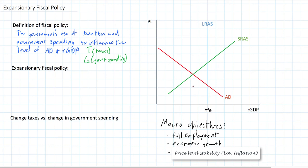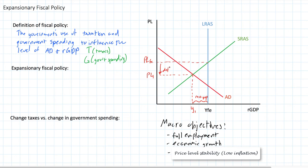Let's go over to our graph and look at a situation in which a country might be interested in implementing expansionary fiscal policies. Notice that this economy is currently producing at Y1, which is at an equilibrium below full employment — this is called a recessionary gap. Its price level of PL1 is lower than the full employment price level, which I'll call PLFE. This country has deflation or perhaps disinflation, which is not good. There are many reasons that deflation is bad for a nation's economy.